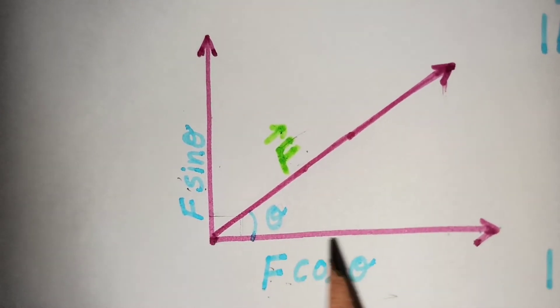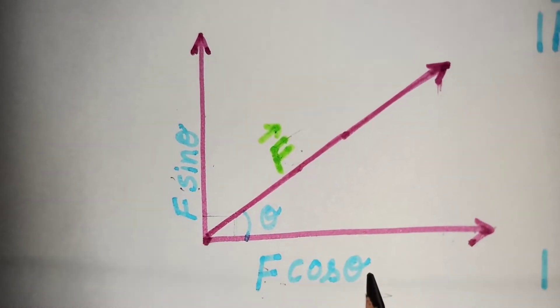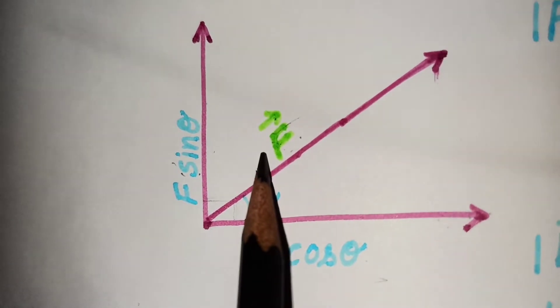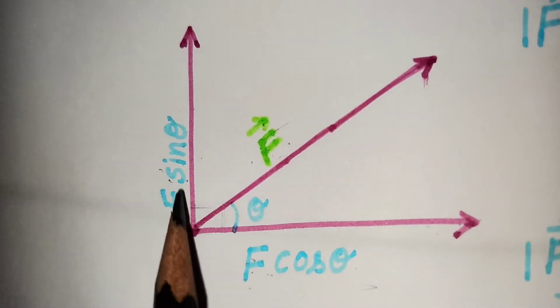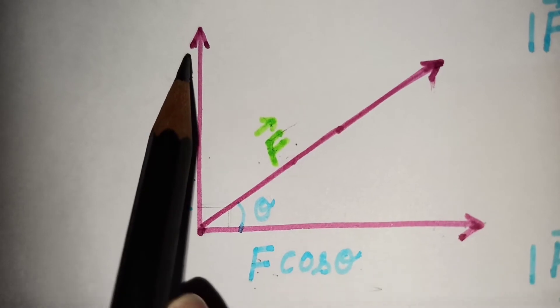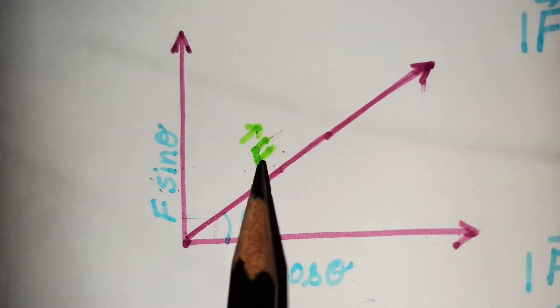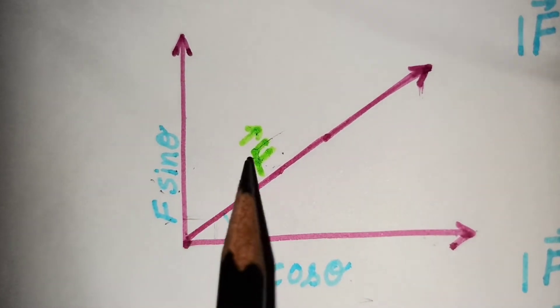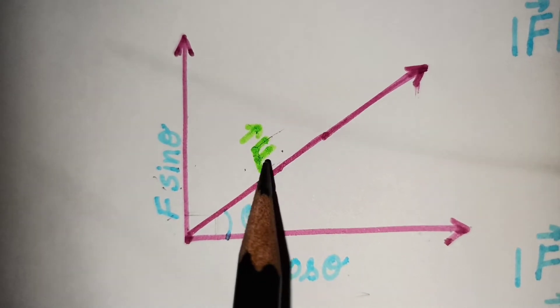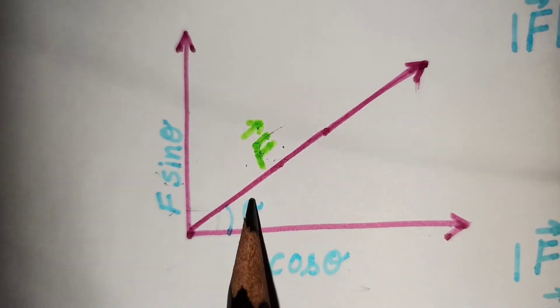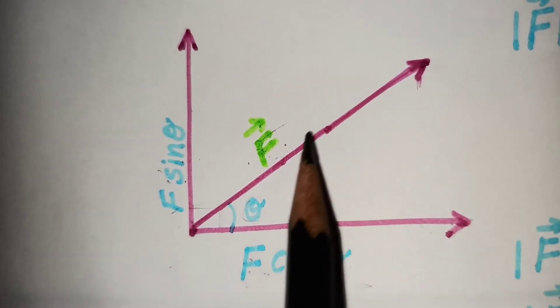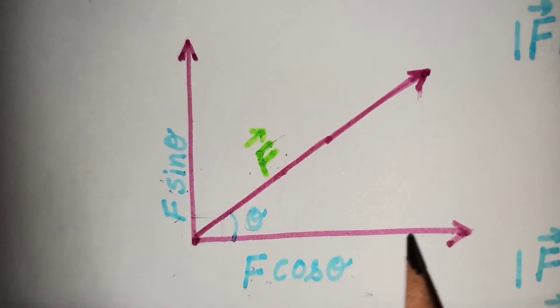The horizontal axis will be f cos theta and it will be the horizontal component of this vector f, and f sine theta will be the vertical component of the vector f where f is the magnitude of this vector and theta is the angle made by this vector f with the horizontal axis.